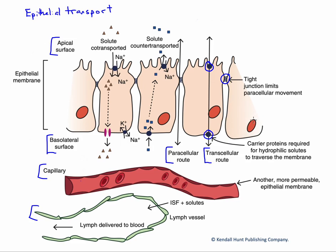If the substance is small and lipophilic, then we don't require carrier proteins. Oxygen and carbon dioxide moving into and out of blood vessels do not require carrier proteins. However, if we're going to move larger solutes across an epithelial membrane, capillary walls and lymphatic walls are very permeable and have pores between the cells that allow larger solutes to move without a carrier. But in barrier epithelia — those lining the GI tract or kidneys — we often need carrier proteins to move substances across these cells, because we can't go between them due to the tight junctions.